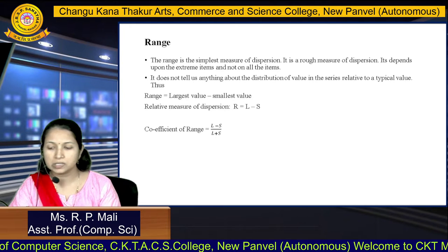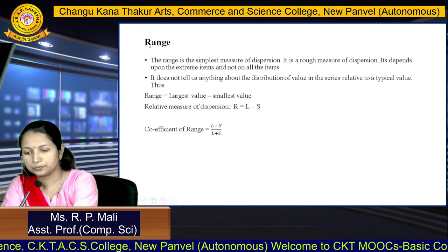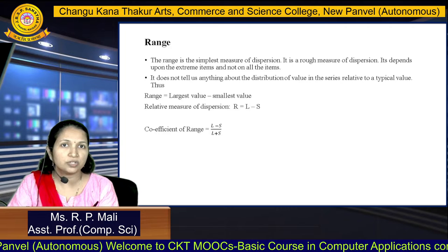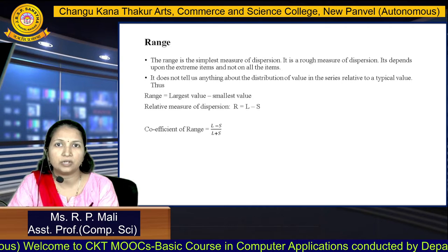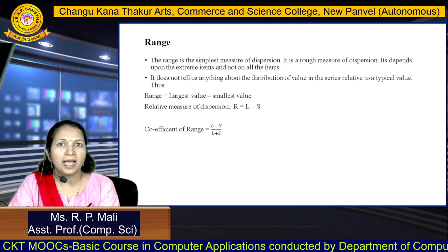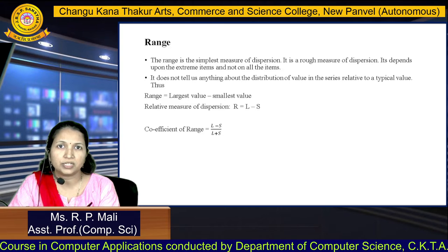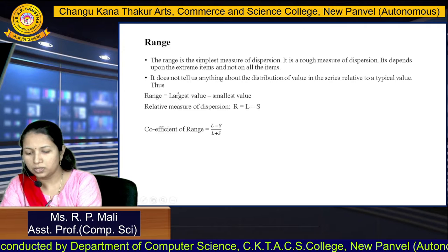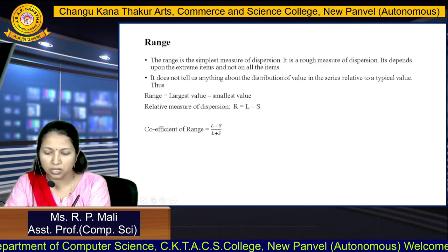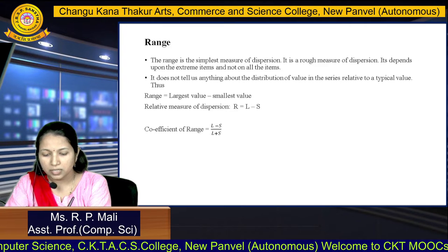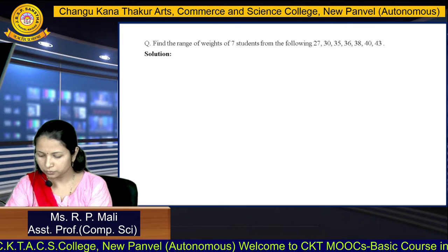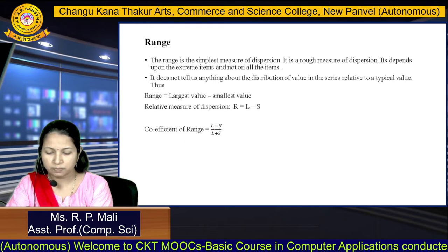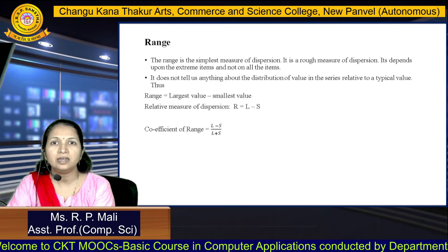First, we are going to see what is range. The range is the simplest and roughest measure of dispersion. It depends only upon the extreme values and not on all the terms, so it does not tell us anything about the distribution of values within the series. Range equals the largest value minus the smallest value, denoted as R = L - S. The coefficient of range equals L minus S divided by L plus S.